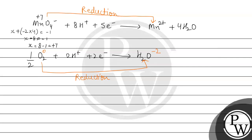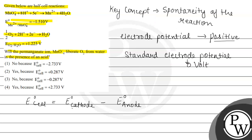Now let's look at the electrode potential values given to us. For MnO₄⁻ to Mn²⁺, the oxidation potential is given, so we convert it to reduction potential. Since oxidation potential equals the negative of reduction potential, the standard reduction potential comes out to be positive: 1.510 volt.